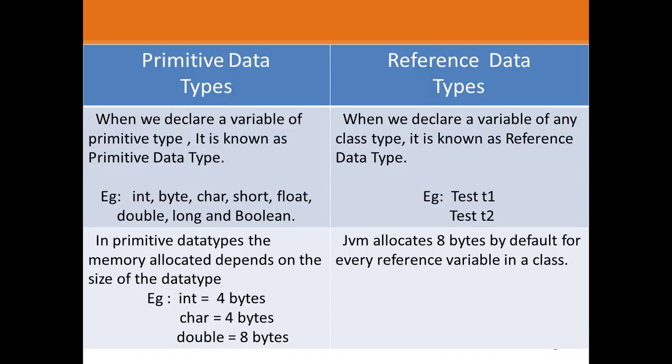JVM allocates eight bytes by default for every reference variable in a class. So no matter what, if it is a reference variable, eight bytes of size will be allocated by default by the JVM in a class.